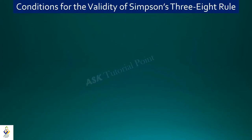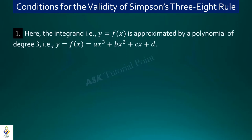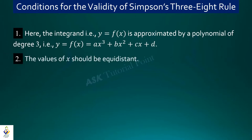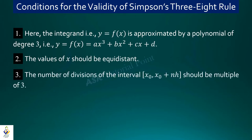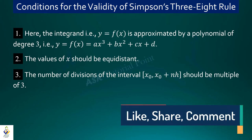Conditions for the validity of Simpson's 3/8 rule: First, we assume that y is a 3rd-degree polynomial in x of the form y = ax³ + bx² + cx + d. Second, the arguments should be equidistant. Third, the number of intervals should be a multiple of 3 — that is, n may be 3, 6, 9, and so on.